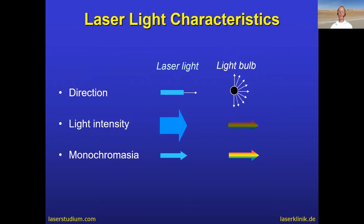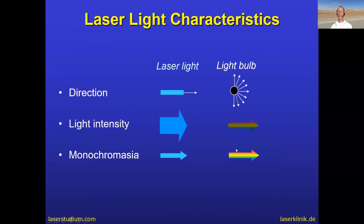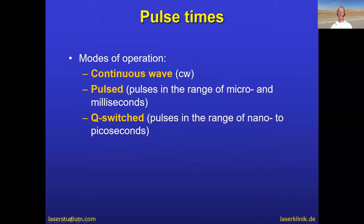In the previous slide, you see the light comes out continuously, or you can make the mirror 100% reflective and only make it transparent for a very short time — then only a very short impulse comes out. The first mode is continuous wave mode. The second is pulsed mode, when pulses come in very short intervals. And the Q-switch mode produces even shorter intervals — nano to picoseconds. We will see in a minute what these different pulsed lasers are useful for.